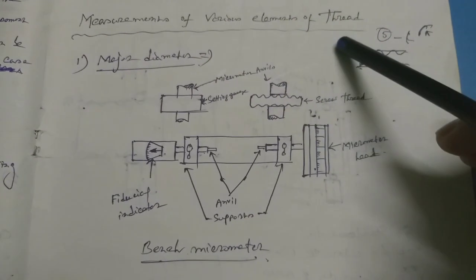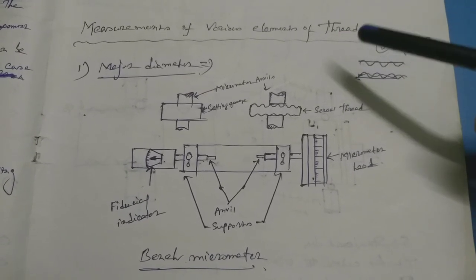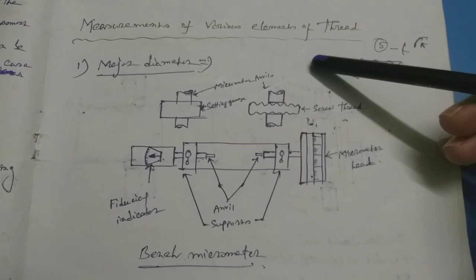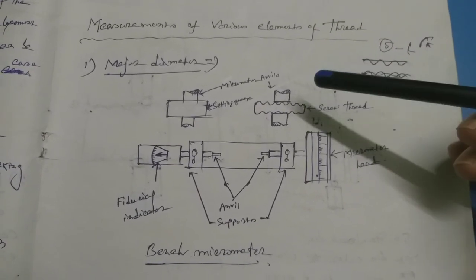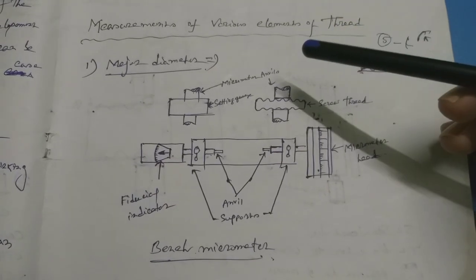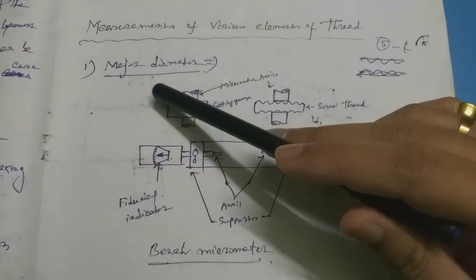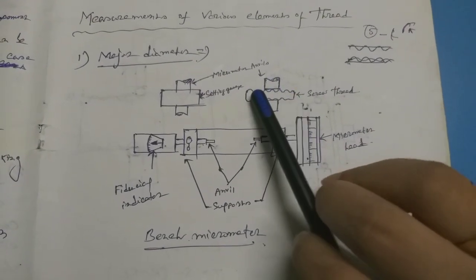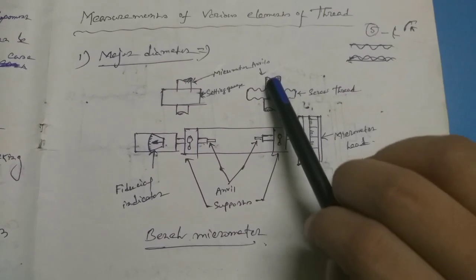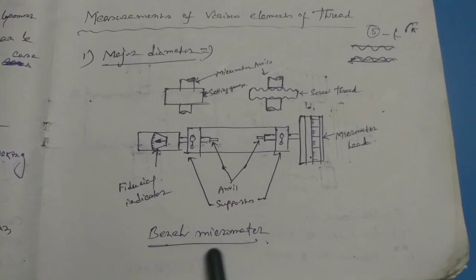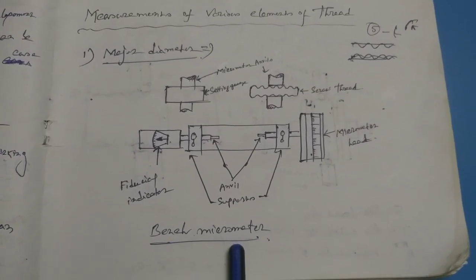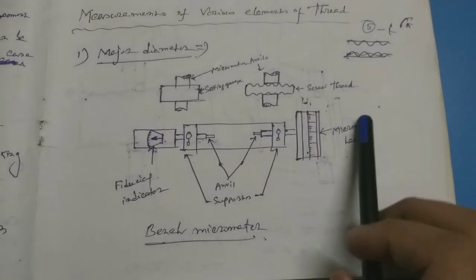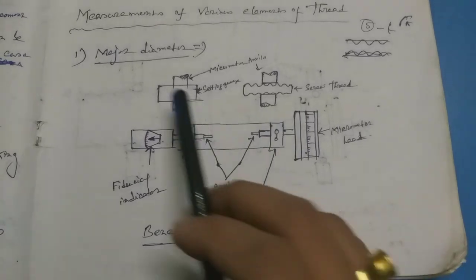Now comes measurement of various elements of a thread — major diameter, minor diameter, and pitch. To measure the major diameter, we use a bench micrometer. This is very important for your exam. We use the bench micrometer setup to measure the major diameter of the thread.